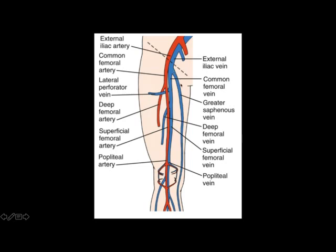I will stress the importance of interrogating the proximal few centimeters of the greater saphenous vein before moving down along the common femoral vein, because instances have been described where clot is present in the greater saphenous vein and has not yet moved proximally to a level where it is visualized at the bifurcation of the greater saphenous vein and the common femoral vein.